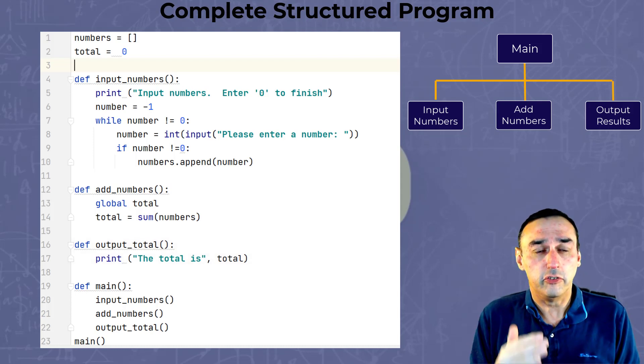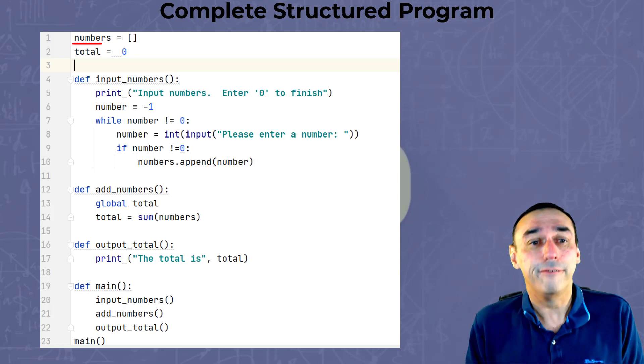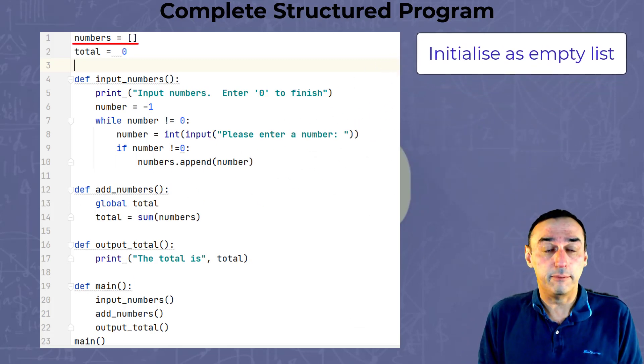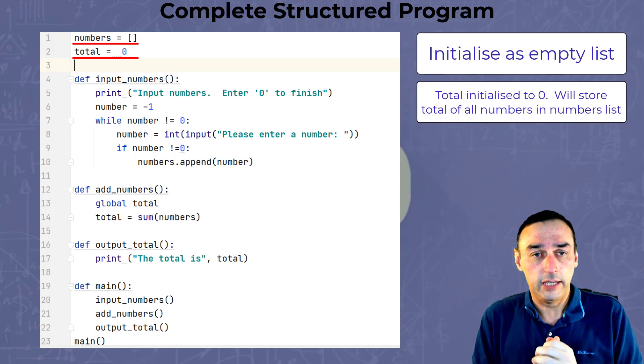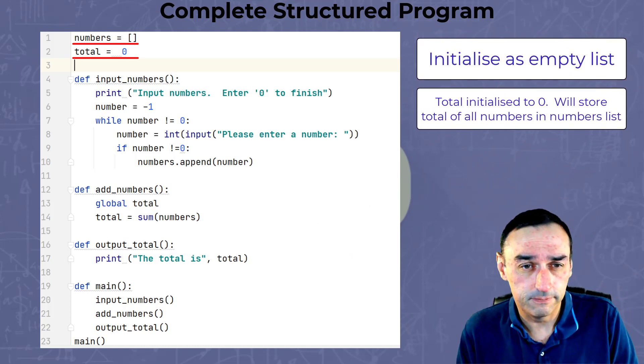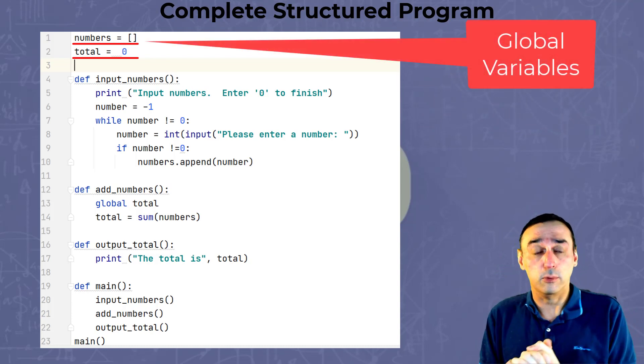So if we look at the top of the program, we have the numbers variable, which is a list, followed by the total variable, which is just going to keep a total of the sum of the numbers in the list. As you can see there, these are what we call global variables.